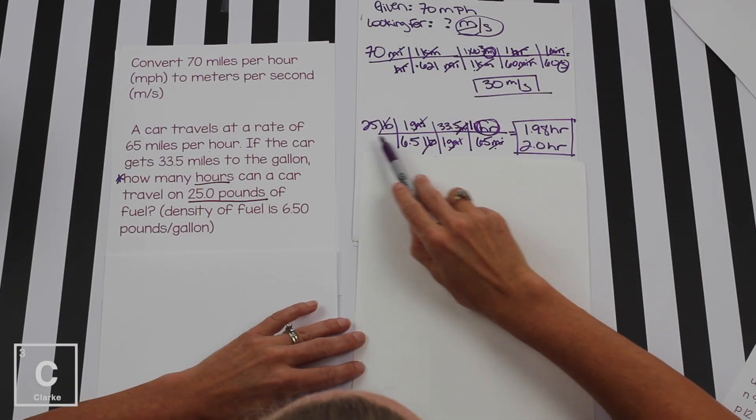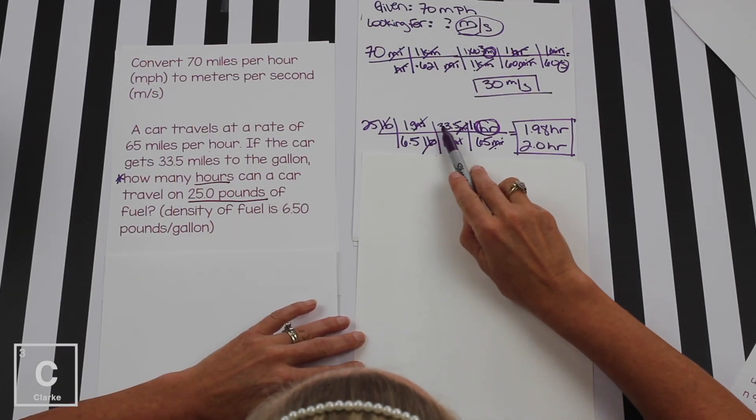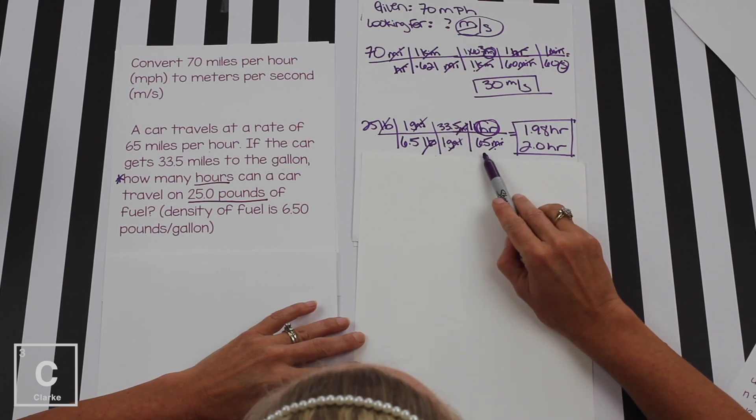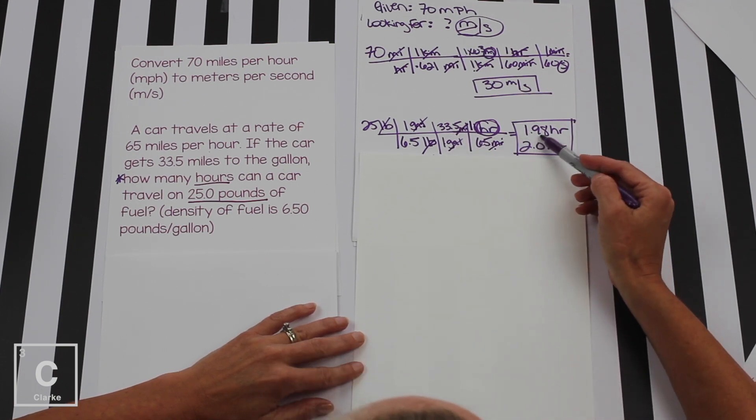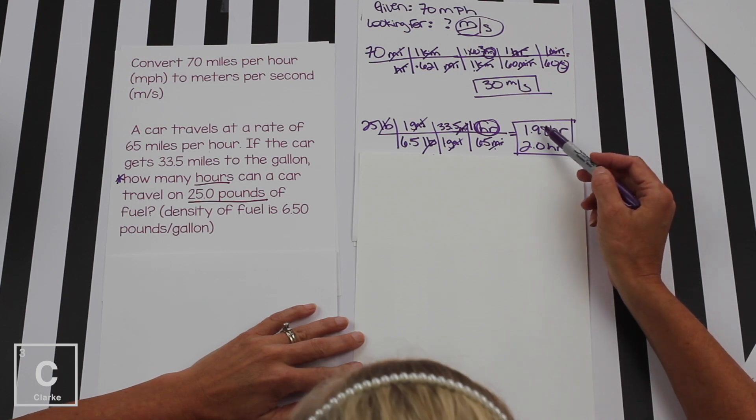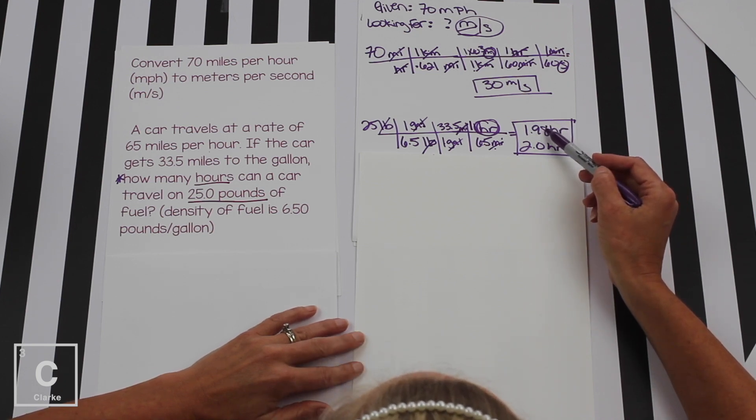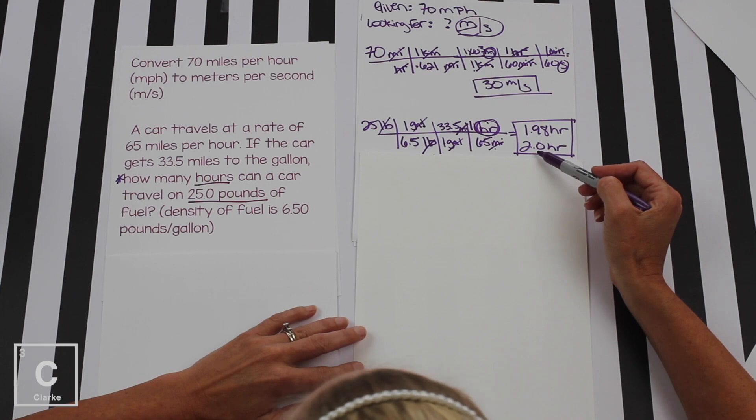Put your equal sign. Put it in the calculator. 25 divided by 6.5 times 33.5 divided by 65. And in my calculator, I'm getting 1.98. Now that's three sig figs and I only needed two sig figs, so I rounded that to 2.0.